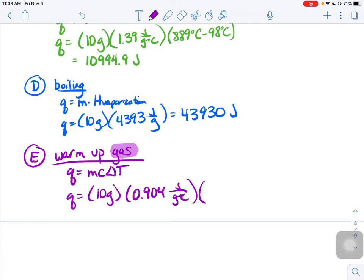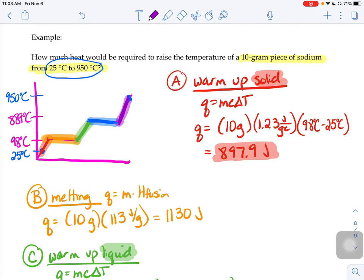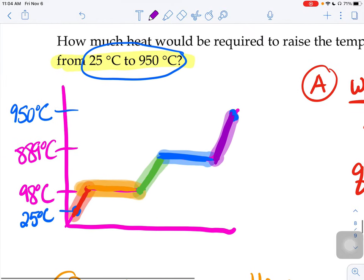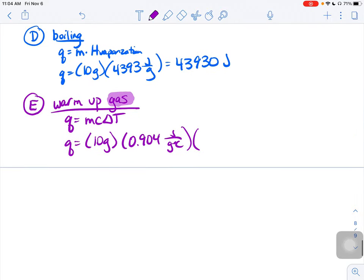The delta T is not from 25 to 950. We want just the delta T for the purple section. The delta T for the purple section is from 889 to 950. So 950 is the hottest it gets, 889 is where the coolest gas temperature is, and that little chunk, we'd get 551.44 joules.